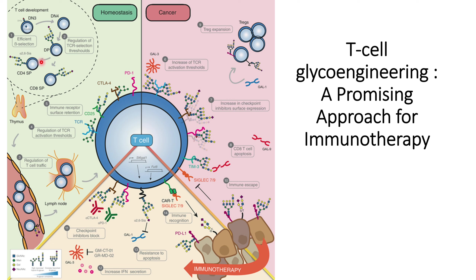After the double positive stage, further selection occurs to determine whether the cells have affinity towards CD4 or CD8. CD4 cells have alpha-2,6-sialic acid structures, whereas CD8 cells do not. This is how normal T cell development occurs, and how glycans play an important role throughout the process.